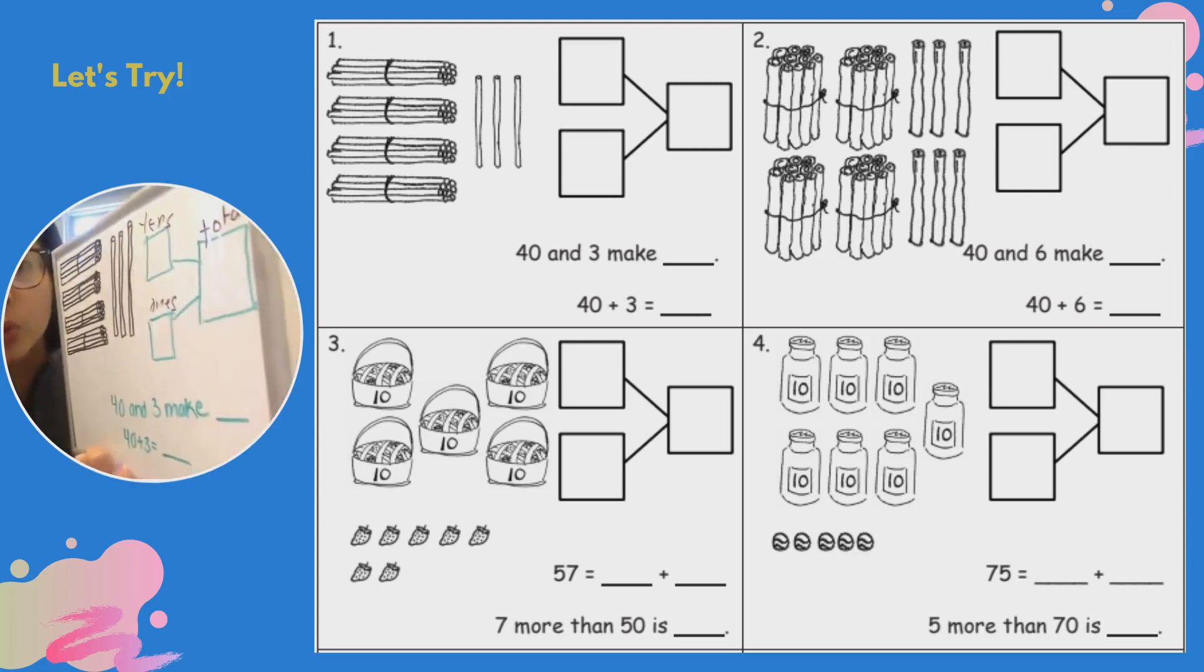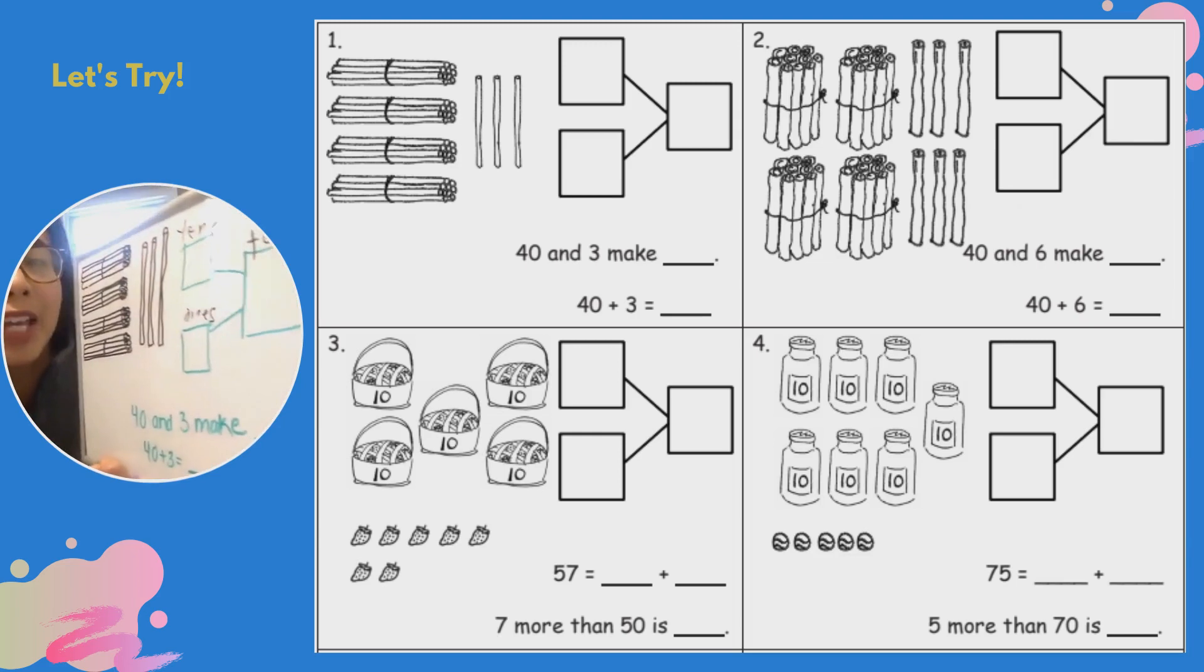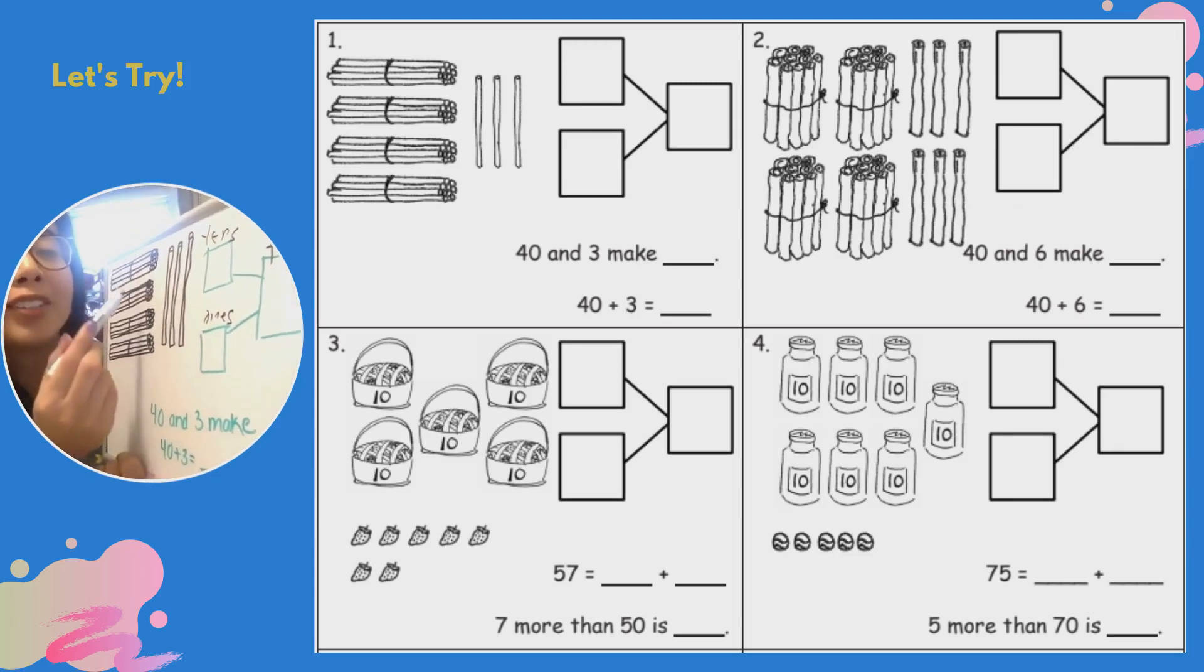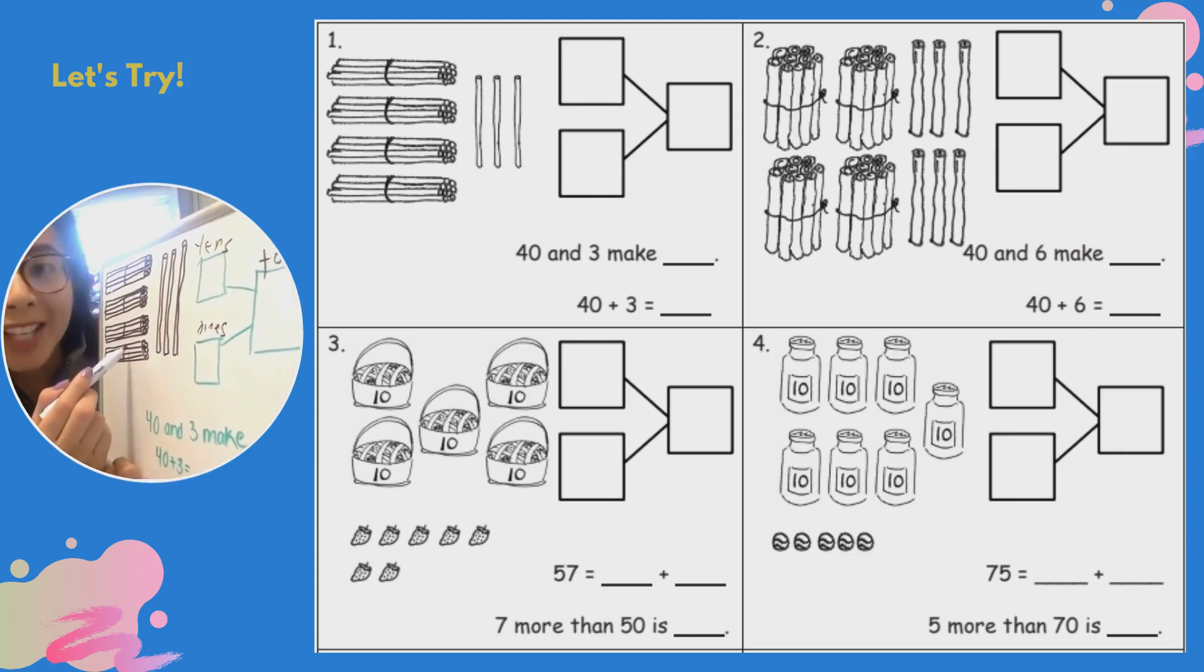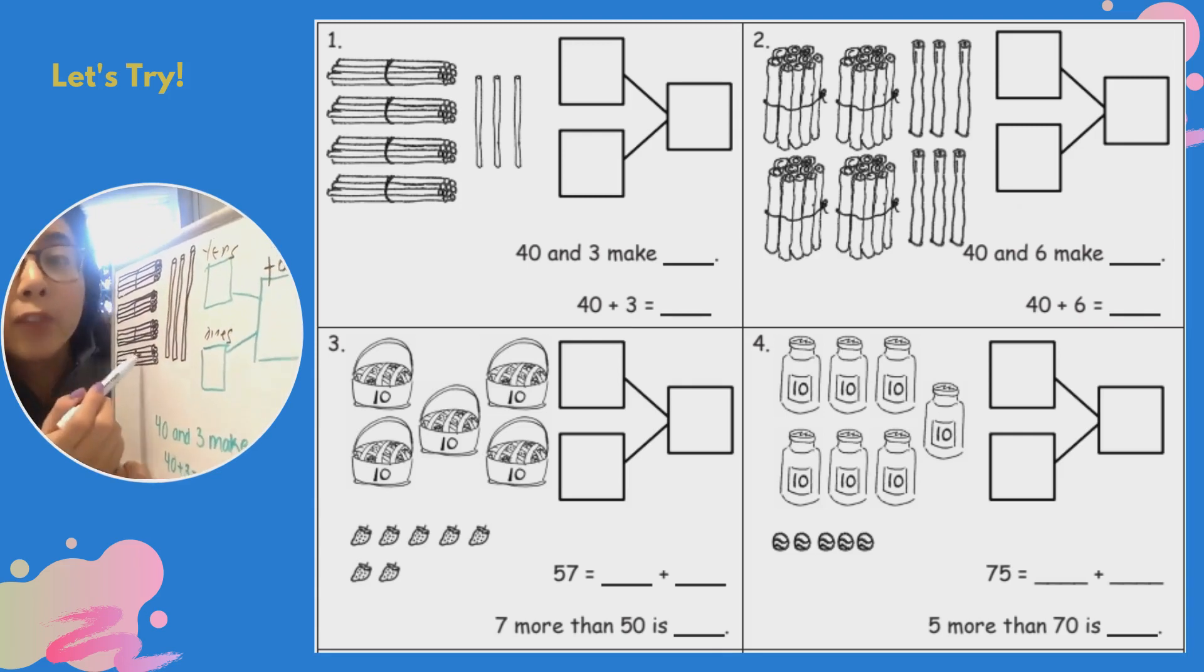So let's count to see how many groups of 10 we have. We have one, two, three, four. Four tens, and that's the same as saying 10, 20, 30, 40 sticks. So we have 40.